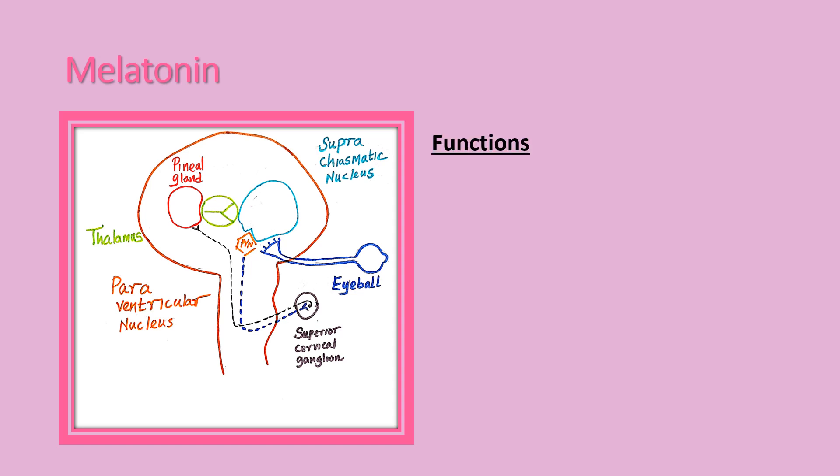Functions of melatonin: Melatonin is important for the circadian rhythm. Circadian rhythm refers to the day and night cycle. Melatonin helps regulate the day and night cycle, and the suprachiasmatic nucleus of the hypothalamus plays an important role in the circadian rhythm.